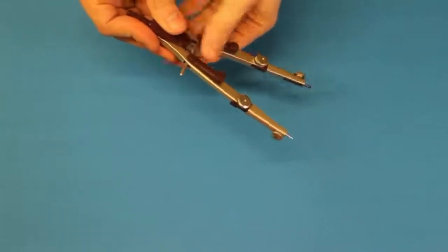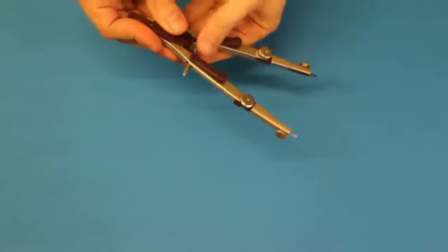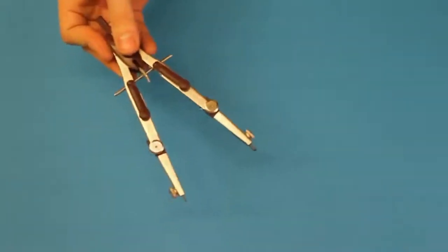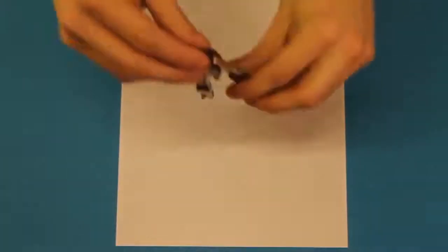Einen Kreis zeichnet man, indem man mit der Nadel in ein Blatt Papier sticht, die Mine auf das Papier setzt und mit einer kreisförmigen Handbewegung einen Kreis zieht.